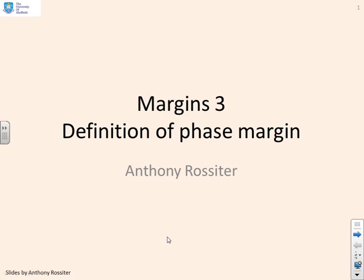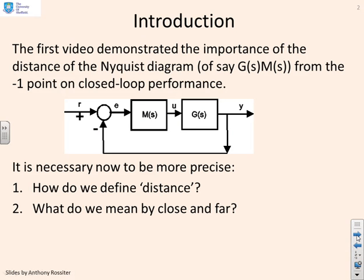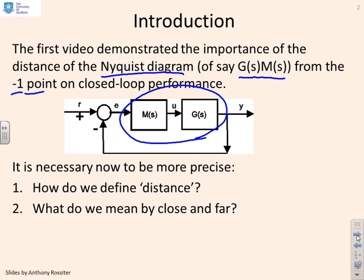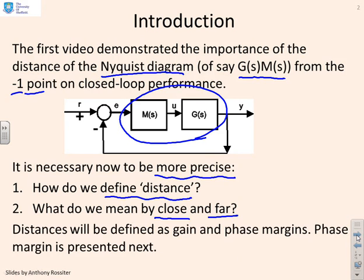This video looks at the definition of the phase margin. The first video demonstrated the importance of the distance of the Nyquist diagram from the minus 1 point. You'll remember that if you have a standard feedback loop, you're actually doing the Nyquist diagram of g(s) times h(s). We also decided we needed a bit more precision — what do we mean by distance? What do we mean by close and far? So this particular video is going to start looking at adding some precision to that.